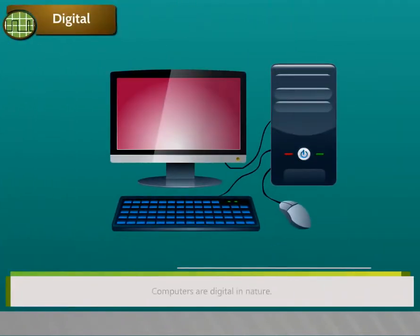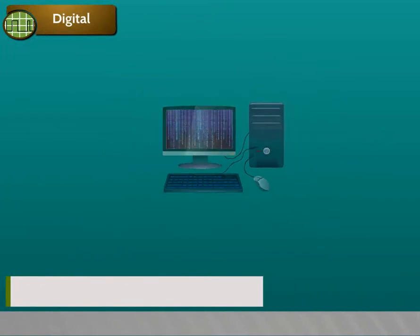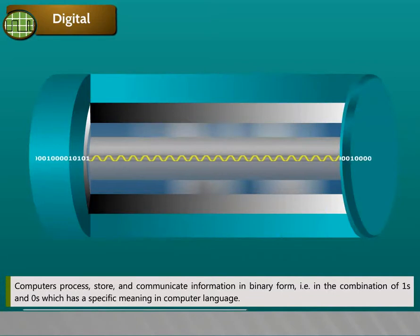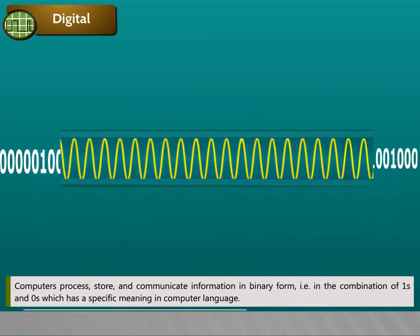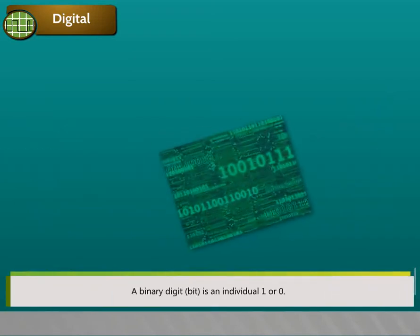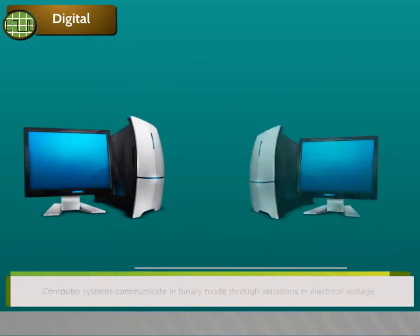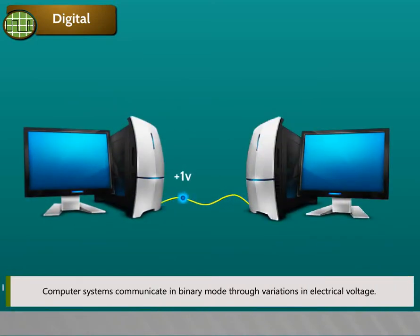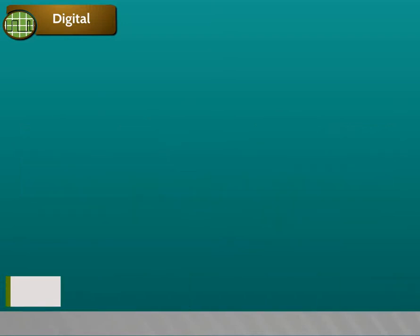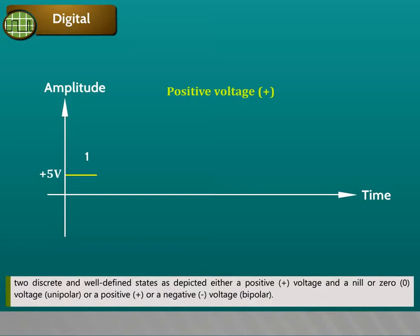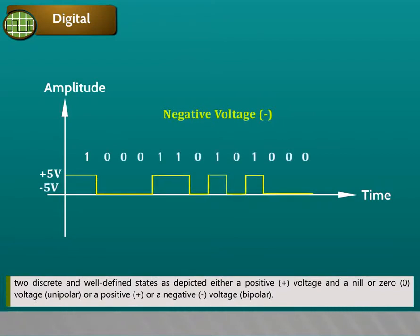Computers are digital in nature. Computers process, store, and communicate information in binary form, i.e., in the combination of 1s and 0s, which has a specific meaning in computer language. A binary digit (bit) is an individual 1 or 0. Computer systems communicate in binary mode through variations in electrical voltage. Digital signaling involves a signal which varies in voltage to represent one of two discrete well-defined states: either a positive voltage and a nil or zero voltage (unipolar), or a positive or a negative voltage (bipolar).